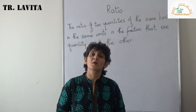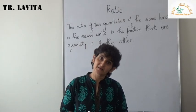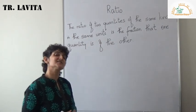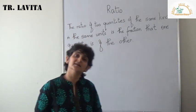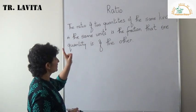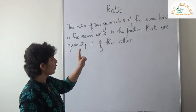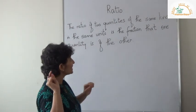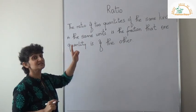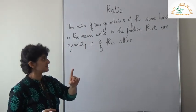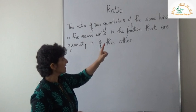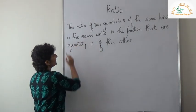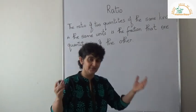Hi students, welcome back. We are starting with a new topic: ratio. First, let's read the definition. The ratio of two quantities of the same kind in the same units is the fraction that one quantity is of the other.